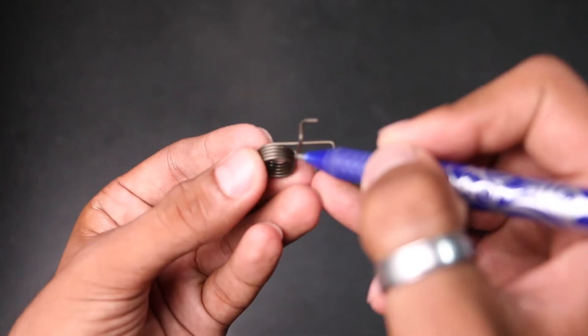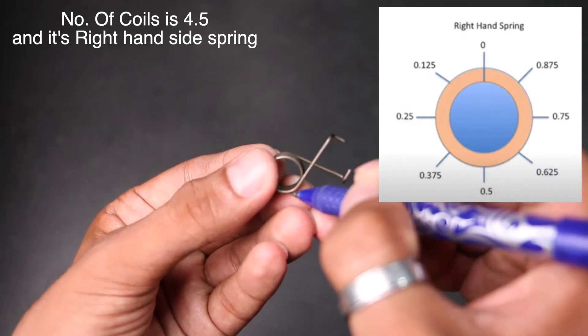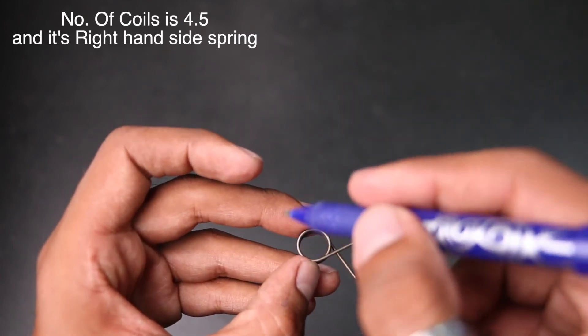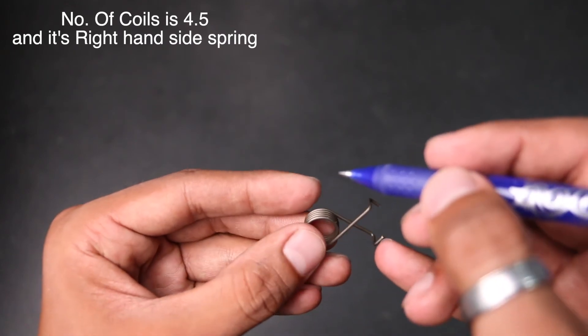Number of coils, counted with same procedure discussed previously, is 4.5. This particular spring rotates clockwise which means it's a right hand side spring.